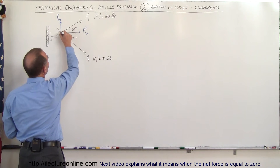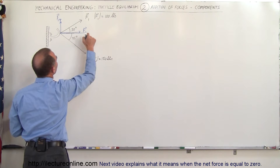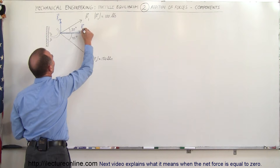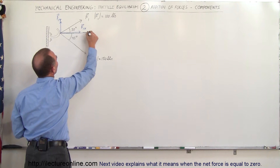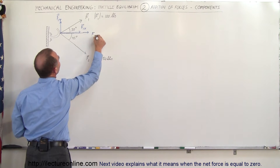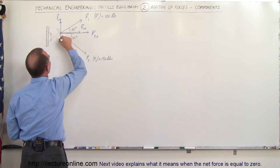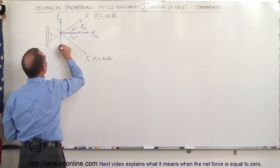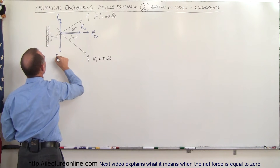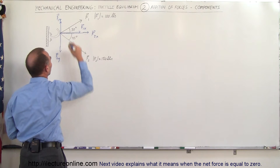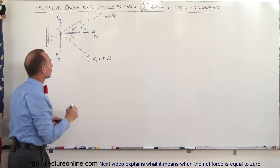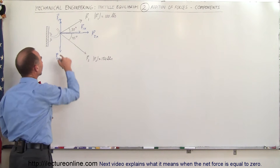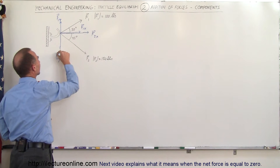We can say that this here is F2 in the X direction, and here is F2 in the Y direction — a little bit longer, like that. Those are all vectors of course. So these two components here represent the single vector F2 right there.